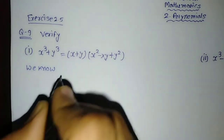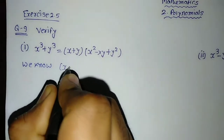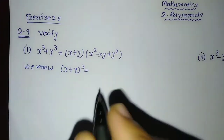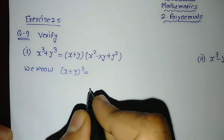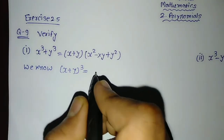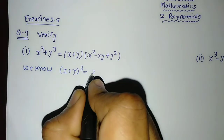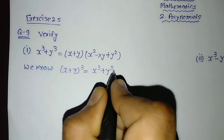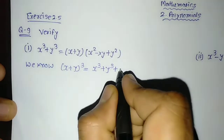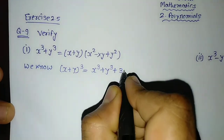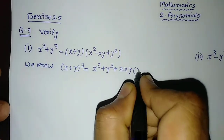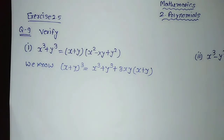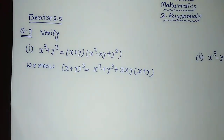We will start with what we already know. We know the formula: x plus y whole cube is equal to x cube plus y cube plus 3 into xy into bracket x plus y. From this only, we are going to prove it.